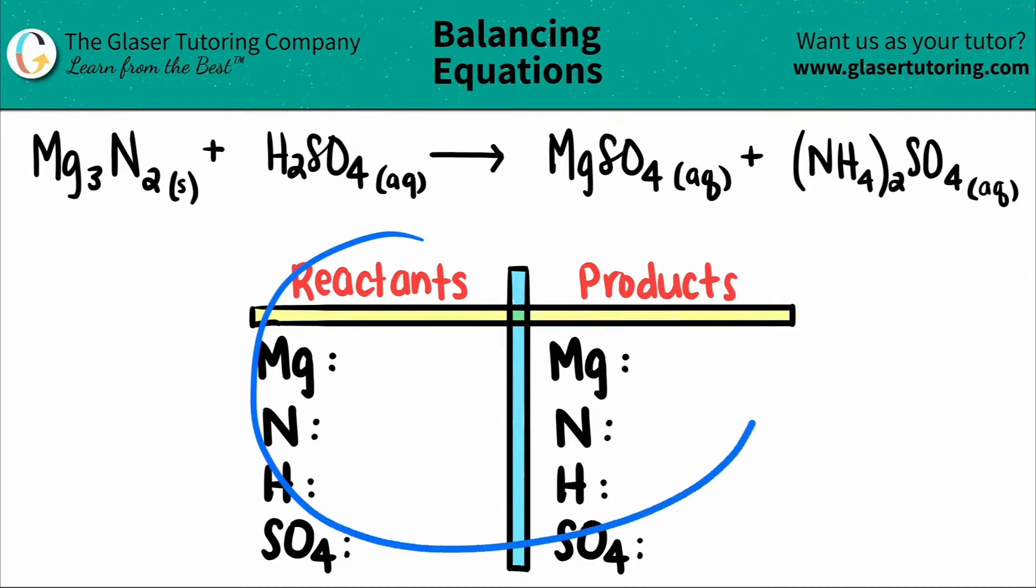I already wrote down a chart and all of the elements or the polyatomics that I see on both the reactant and product side. Notice that I have grouped the sulfate together as SO4.